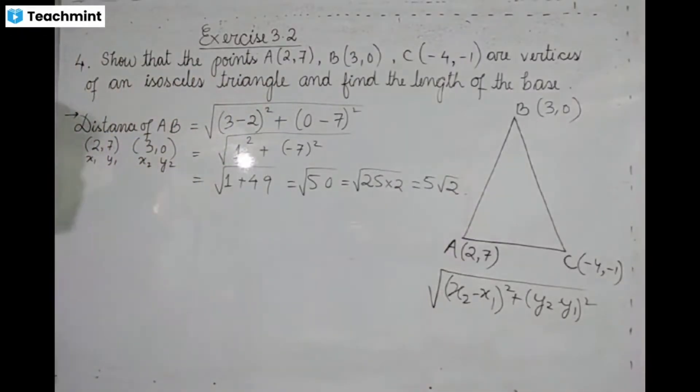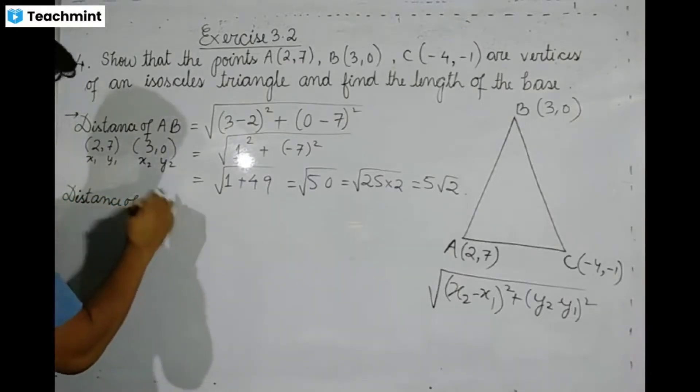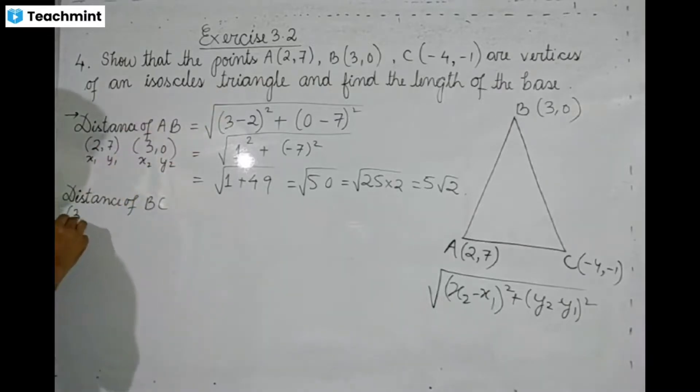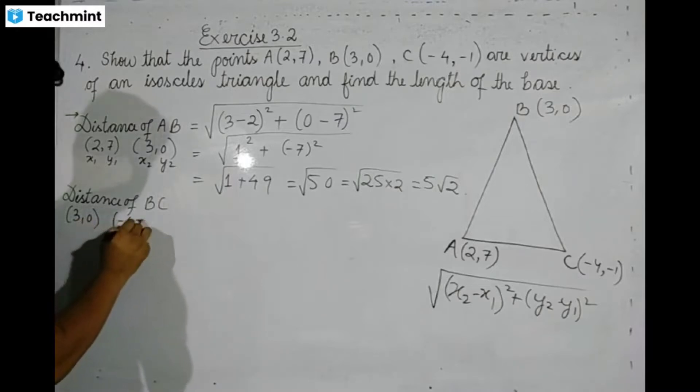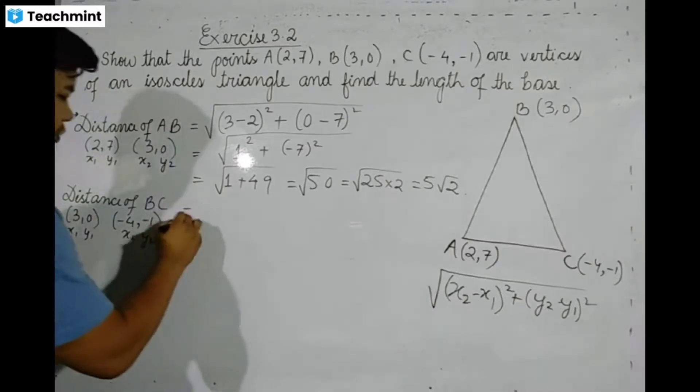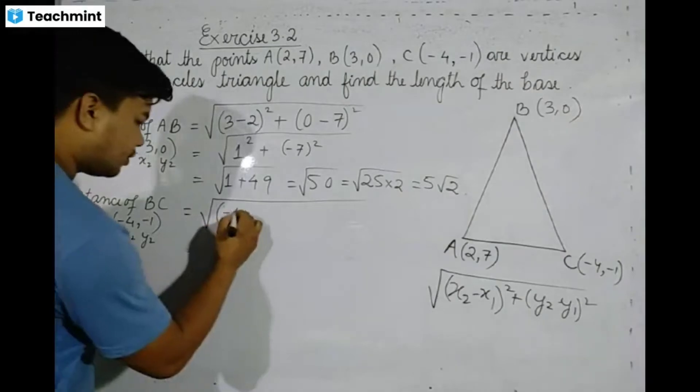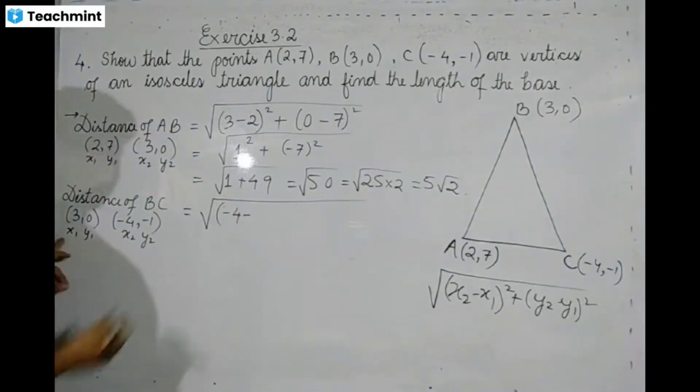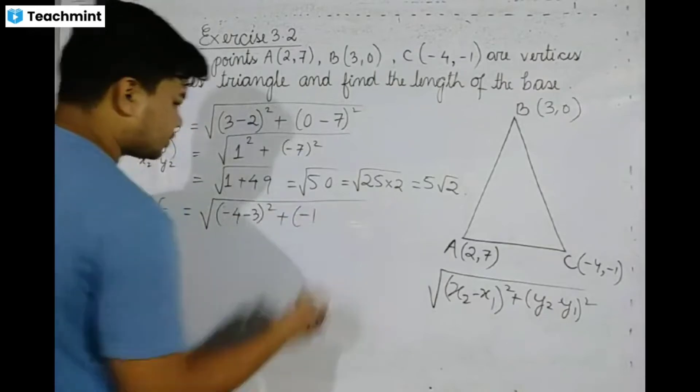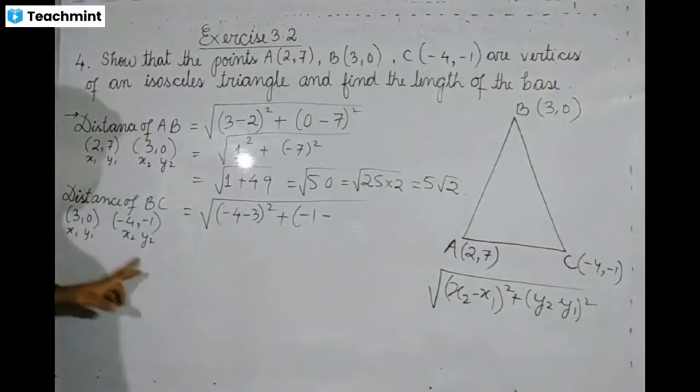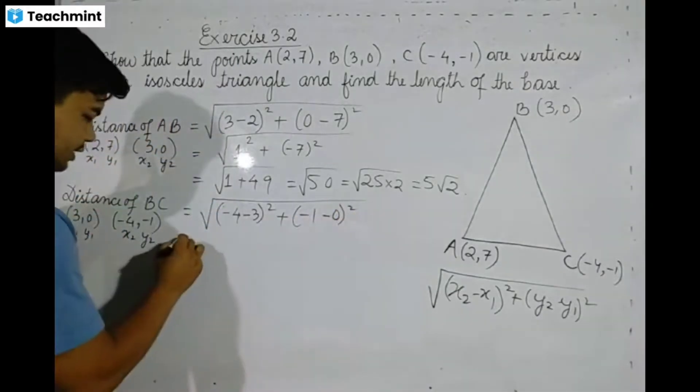Next, distance of BC. B's coordinates are (3,0) and C's coordinates are (-4,-1). So x2 - x1 equals -4 minus 3, and y2 - y1 equals -1 minus 0.